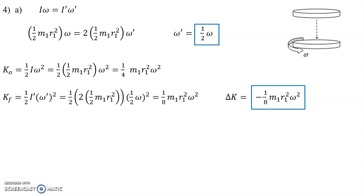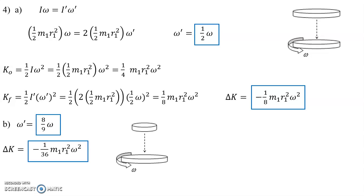Letter b is a similar idea now, except we're changing the second disk, so it has half the mass and half the radius, so obviously things change. I'm not going to go through all of the solution here. Instead, I'm just going to present you with the answers. I'll leave it as an exercise to you if you'd like to try it. It's really just an exercise in algebra and keeping careful track of all the terms, so here's our results. The omega prime is 8 ninths omega, and the change of kinetic energy is negative one thirty-sixth m1r1 squared omega squared.